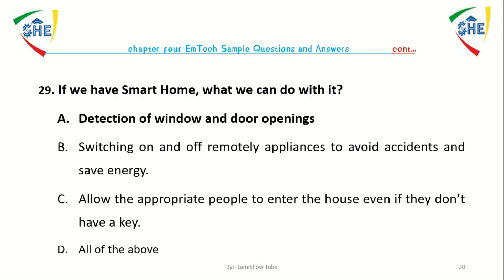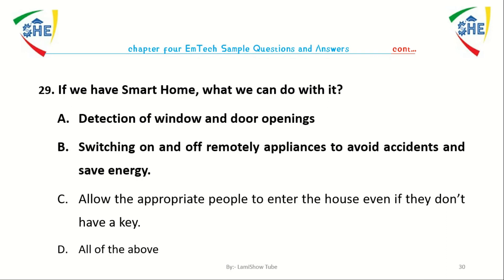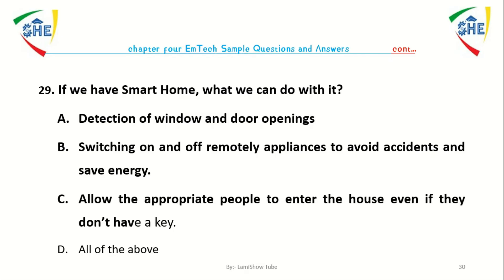If we have a smart home, what can we do with it? A. Detection of window or door opening. B. Switching on or off remotely to avoid accidents and save energy. C. Allow the appropriate people to enter the house even if they don't have the key. D. All of the above.